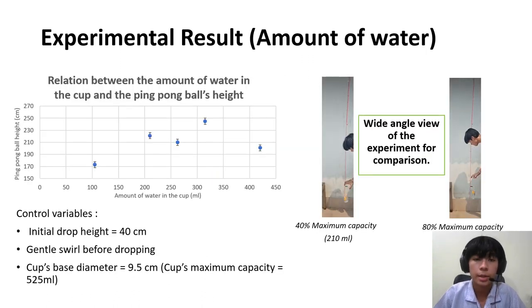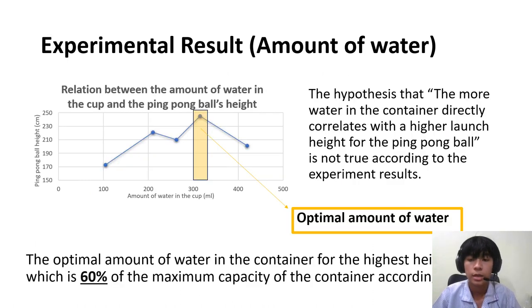Here's the experimental result for different amounts of water in the container. And right here, we have the wide-angle view of the experiment for comparison. As you can see, the optimal amount of water for the maximum height is around 60% of the maximum capacity of the container.